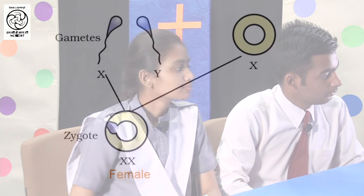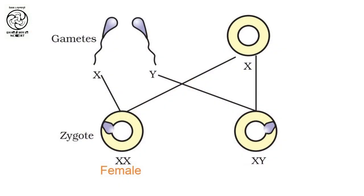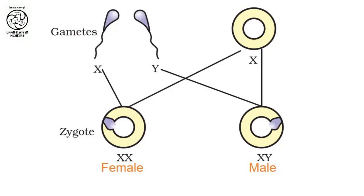Now what happens after fertilization? There can be various possibilities of combination of chromosomes during fertilization. Let us have a closer look. If a sperm containing the X chromosome fertilizes the egg, which always contains the X chromosome, then a female child is born. Now students, can you tell me what will happen if a sperm containing the Y chromosome fertilizes the egg cell containing the X chromosome? A male child will be born. Absolutely right!